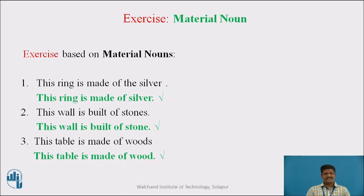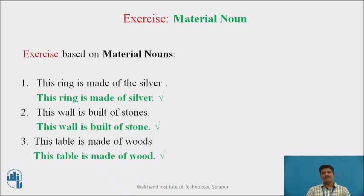Sentence No. 3: 'This table is made of Woods.' The same rule applies — 'Woods' is used as a Material Noun and must be in the singular form. The right sentence is: this table is made of wood. Note that the plural 'Woods' has a different meaning — it refers to a forest. Here we need the Material Noun sense, so we use 'wood' (W-O-O-D).